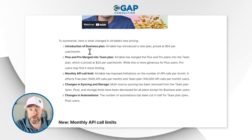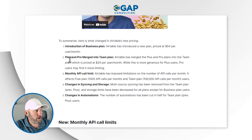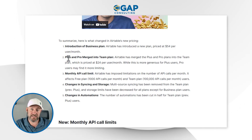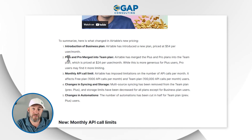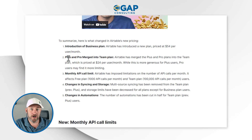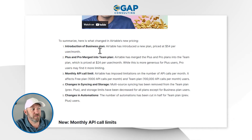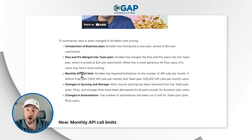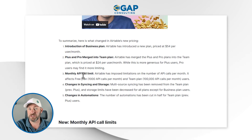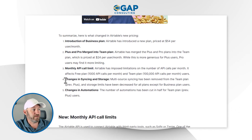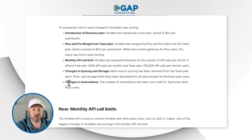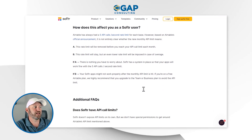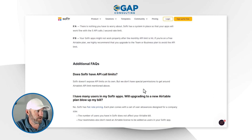The big changes include the introduction of a new upgraded business plan, the removal of the plus plan, and the pro and team plans — previously $20 and $10 respectively — being bundled together. The cheapest Airtable plan is now $20 per user, now called the team plan. We're also getting a limitation on API calls, which will impact Softr users. There are also changes in syncing, storage, and automation. Softr has put together a great blog post — I recommend going through it.